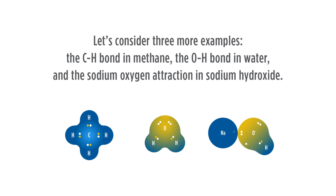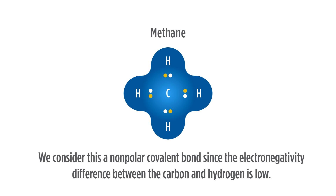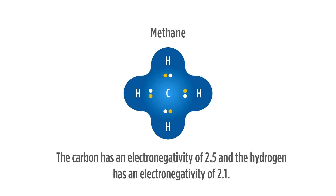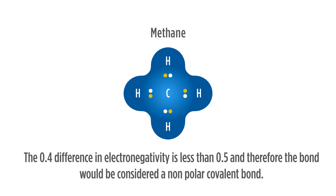Let's consider three more examples: the C–H bond in methane, the O–H bond in water, and the sodium–oxygen attraction in sodium hydroxide. For the C–H bond in methane, we consider this a nonpolar covalent bond since the electronegativity difference between carbon and hydrogen is low. Carbon has an electronegativity of 2.5 and hydrogen has an electronegativity of 2.1. The 0.4 difference in electronegativity is less than 0.5, and therefore the bond would be considered a nonpolar covalent bond.